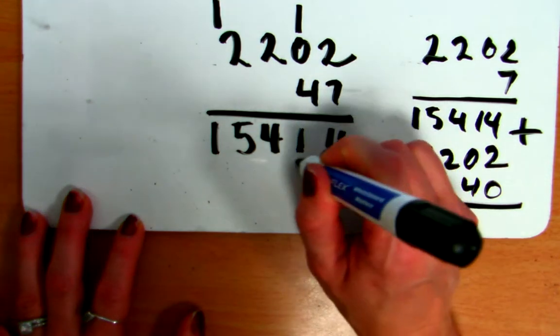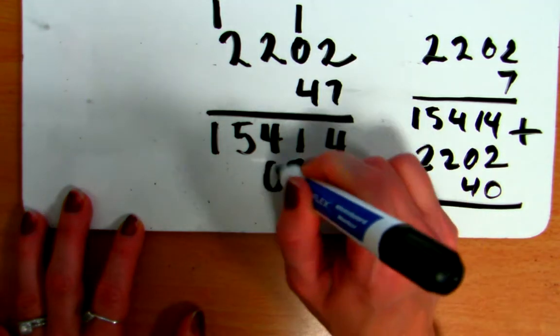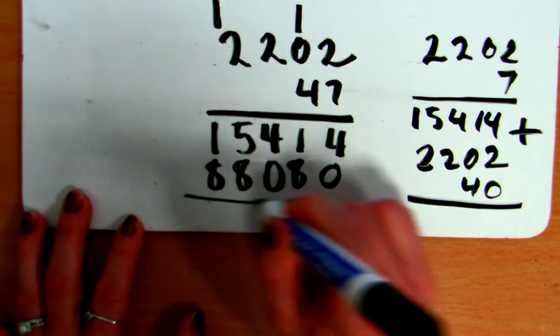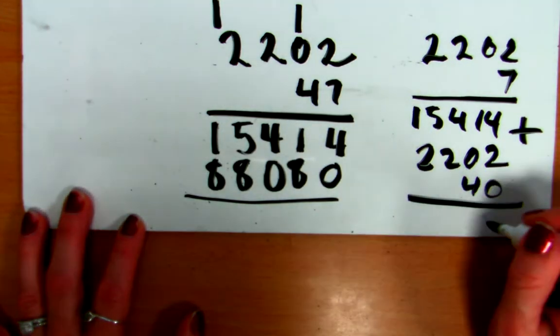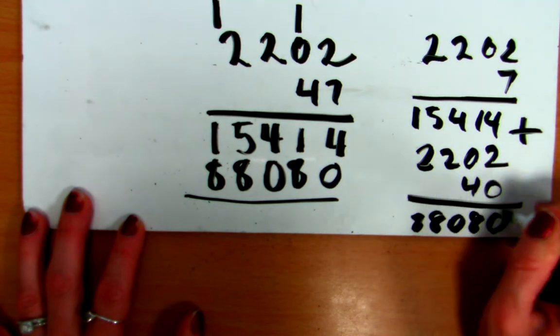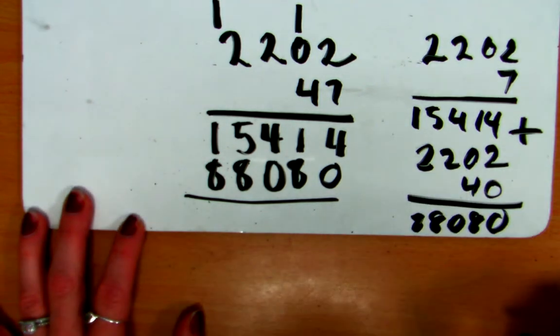So, 4 times 2 is 8, 4 times 0 is 0, 4 times 2 is 8, 4 times 2 is 8, and I get 8, 8, 0, 8. So, this would be 88,080, which makes sense as an answer.